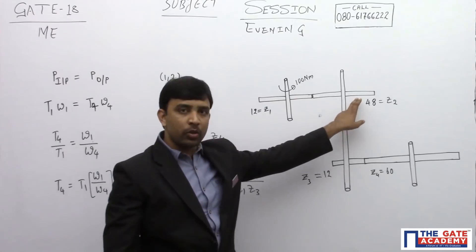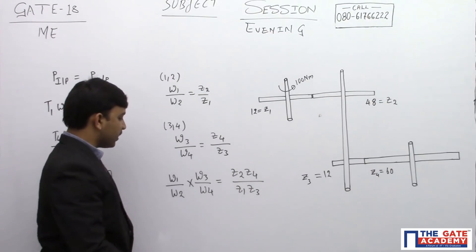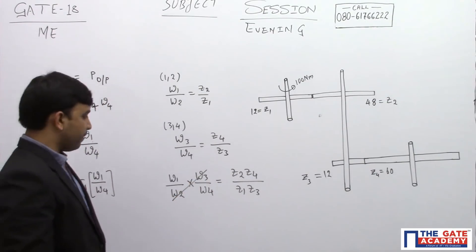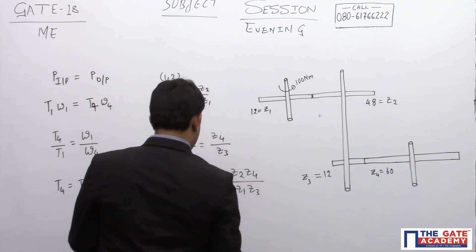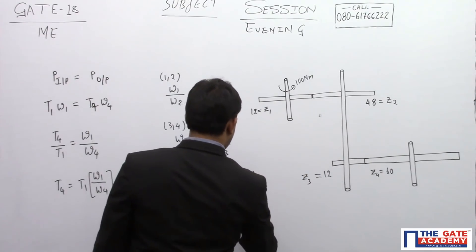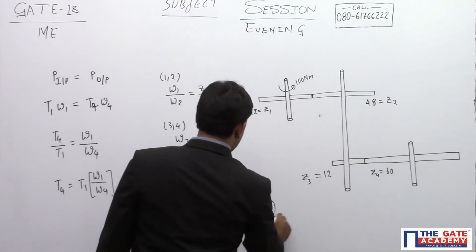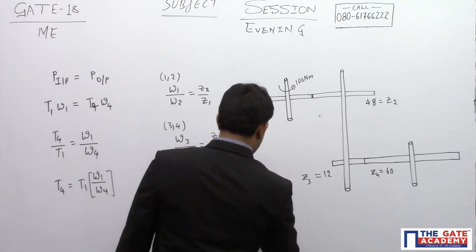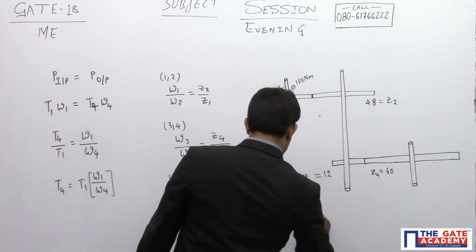Gear 2 and gear 3 are mounted on the same shaft, so the speed of gear 2 equals the speed of gear 3. This means ω2 cancels with ω3, giving us ω1 / ω4. Substituting the values: Z2 = 48, Z4 = 60, Z1 = 12, Z3 = 12. Simplifying: (48 × 60) / (12 × 12) = 2880 / 144 = 20. So the speed ratio is 20.